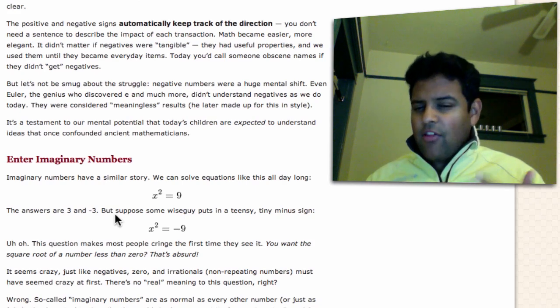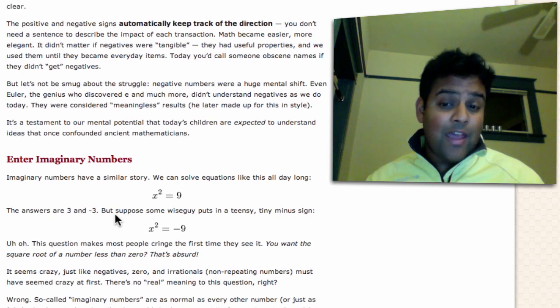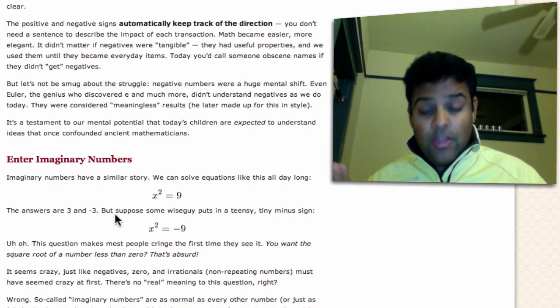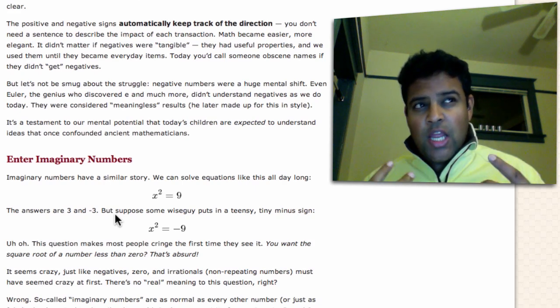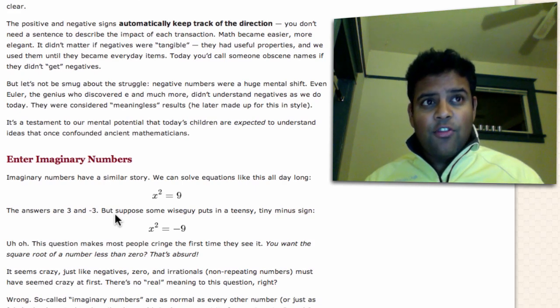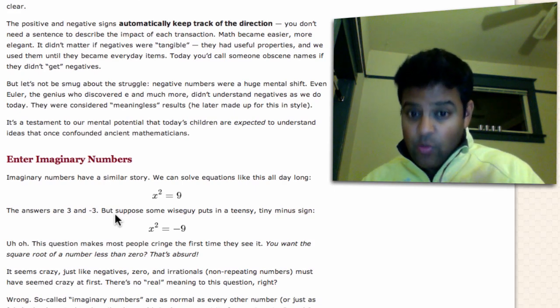Because x squared equals nine is really the same as one times x squared equals nine. So you start with one, multiply it by x, multiply it by x again, and we get nine. So the question is, what x would give us nine after applying it twice? Well, if we have three, we go from one to three and three to nine. Or if we have negative three, we go from one to negative three and negative three to nine. So the idea is, what transformation, what sort of change when we apply it twice could get us to nine?